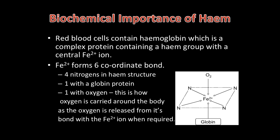The final coordinate bond is with an oxygen atom from an oxygen molecule. This is how the haemoglobin carries oxygen around the body. The oxygen is picked up in the lungs and is released in the cells around the body where it is needed.